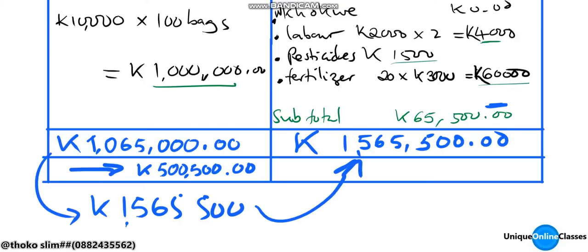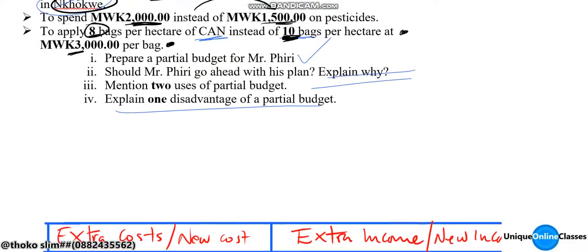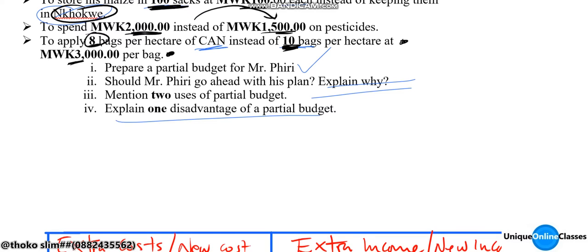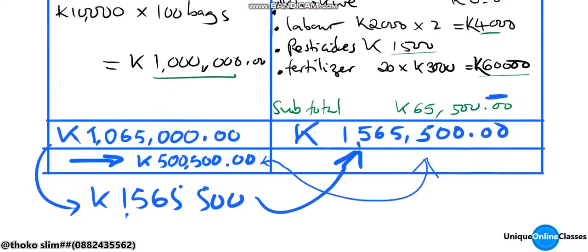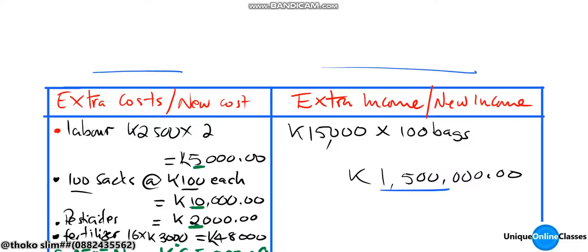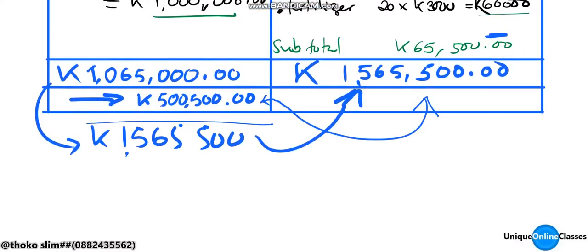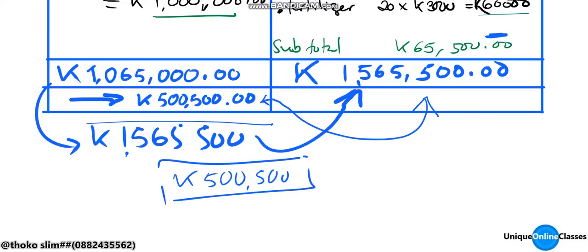We can see that total gains are much greater than total costs. According to the first question, should Mr. Piri go ahead with his plans? The answer is yes, because gains are greater than total costs. His net gain is 500,500 kwacha.